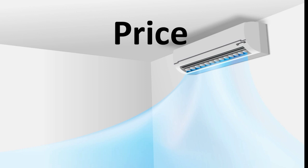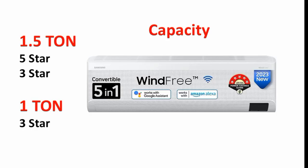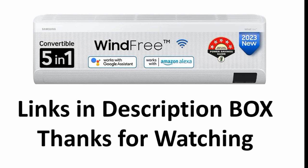The AC is available in three capacities: 1-ton, 1.5-ton in 3-star, and 1.5-ton in 5-star. You can choose based on your room size — ground floor or top floor. The 3-star AC links are in the description below. Thanks for watching!